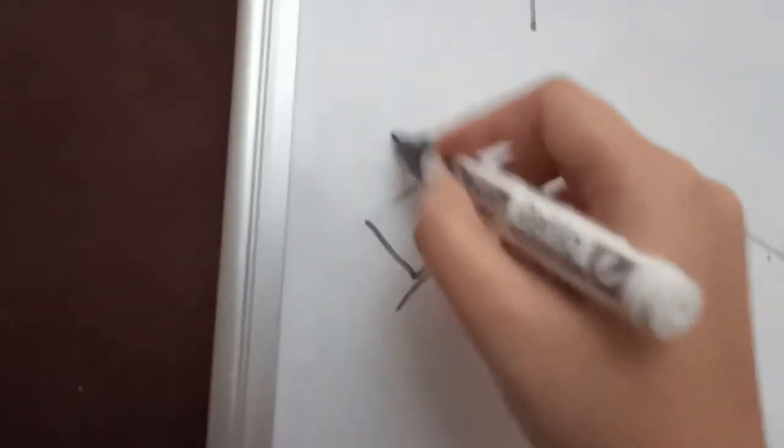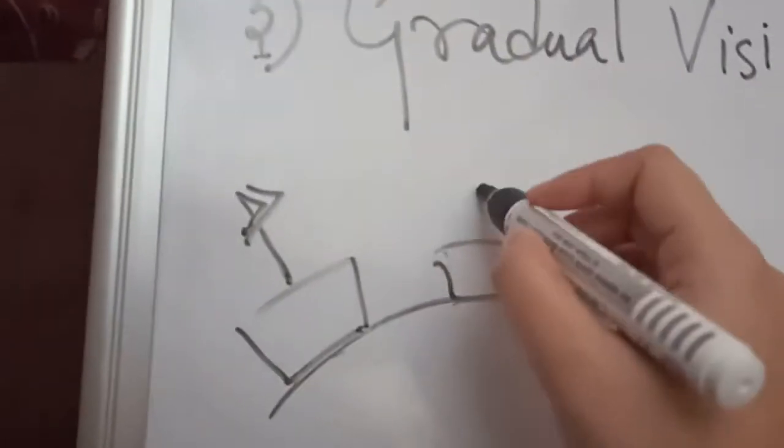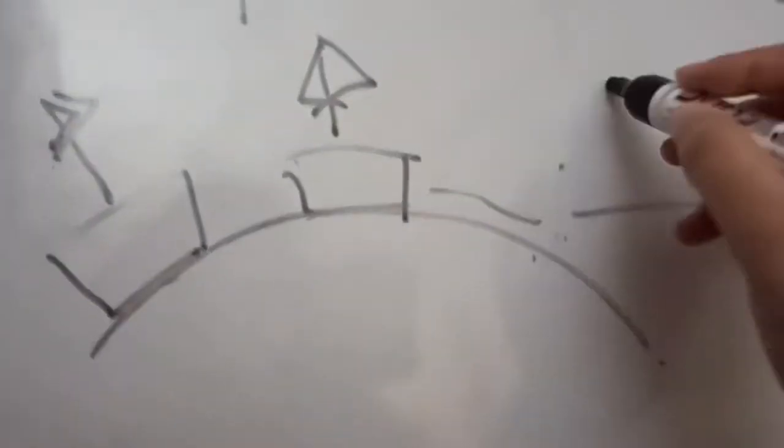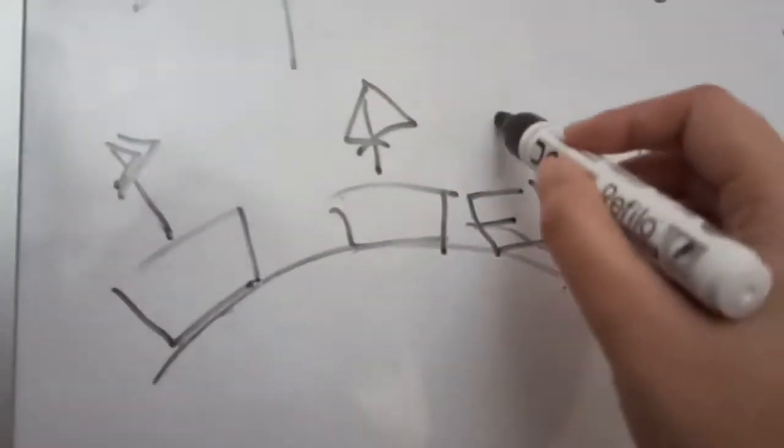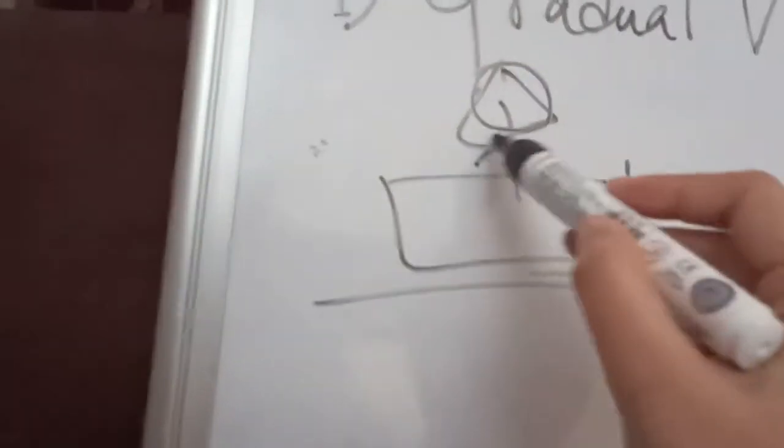The next point is gradual visibility. When we see a ship approaching, we first see the topmost portion or the flag of the ship. Then we can see a little bit more of the ship visible, and slowly when it approaches near where we are standing, we can see the full ship. But if the Earth were flat like this, we could have seen the full ship at first sight.